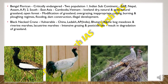Then we have the Black Necked Crane, which is vulnerable. It is found in China, and in India it is found in Ladakh and Arunachal Pradesh, and also in Bhutan. They are seen in alpine bog meadows, riverine marshes and lacustrine marshes. The main threats are intensive grazing and use of pesticides, resulting in grassland degradation.